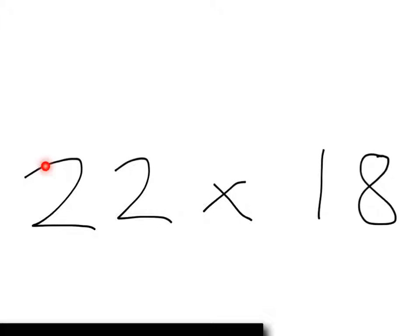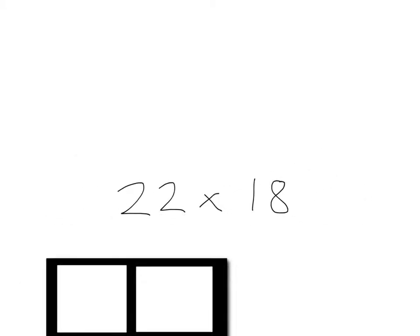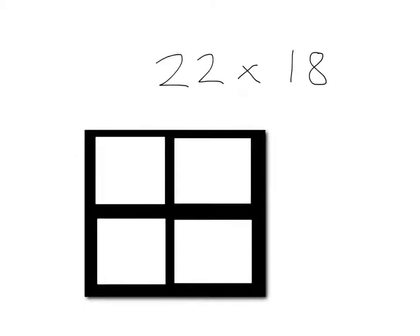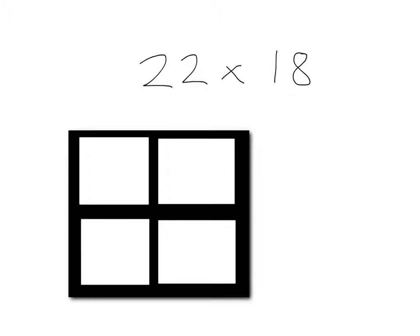So this would become 20 from the two tens and 2, whereas this would become 10 because of the 1 in the tens column and 8. You must draw a grid which is a 2 by 2 because this is 2 number times by another 2 number.